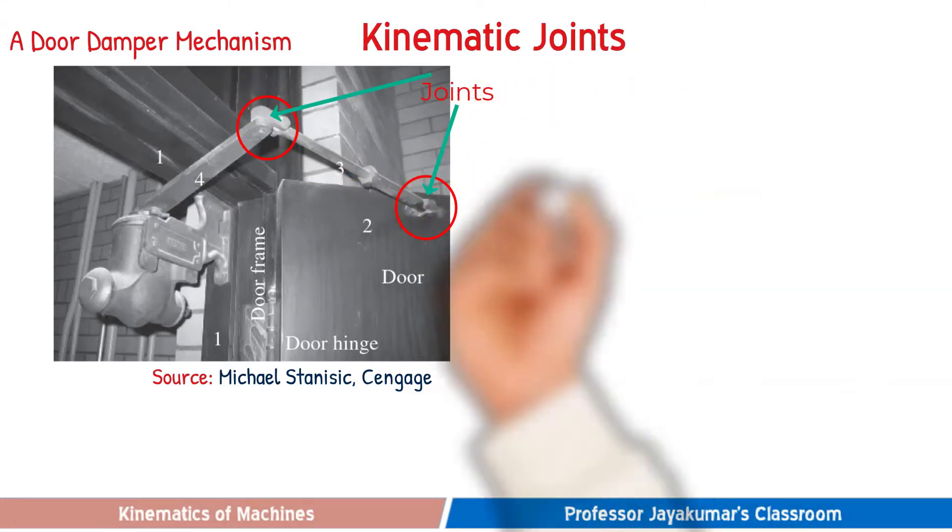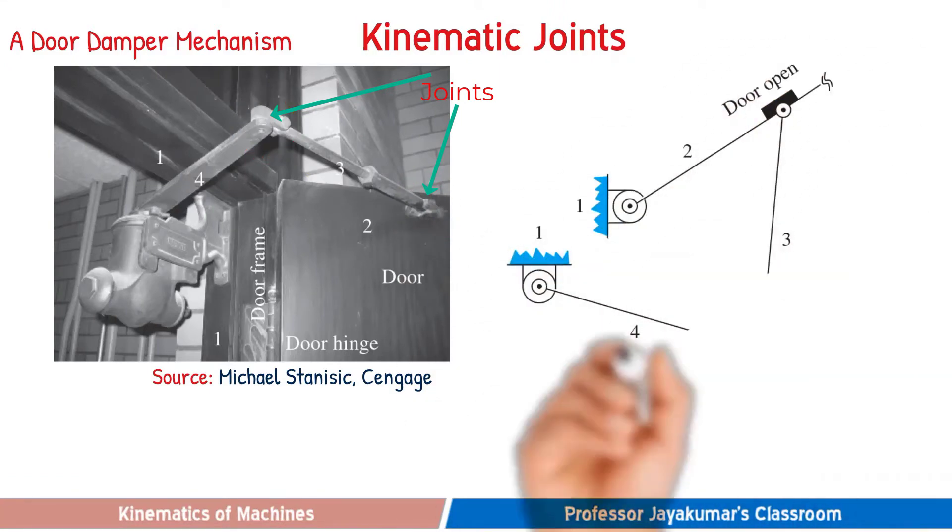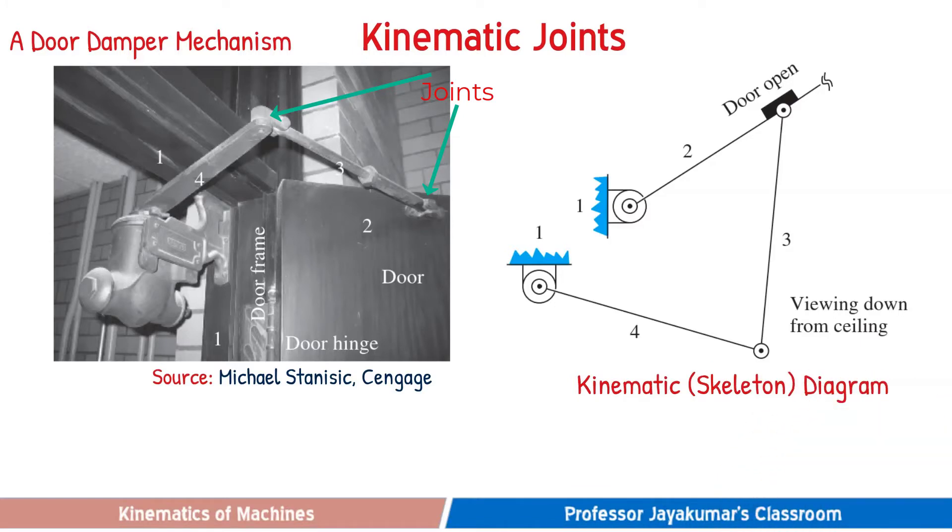The skeleton diagram of the given mechanism can be drawn. This diagram is also known as kinematic diagram. A kinematic diagram illustrates the connecting of links and joints of a mechanism without bothering about dimensions or shape of those various parts.